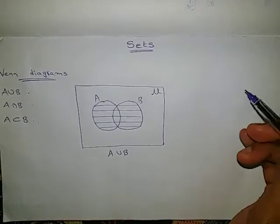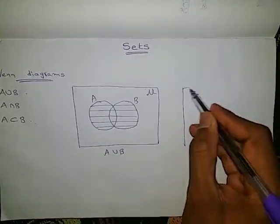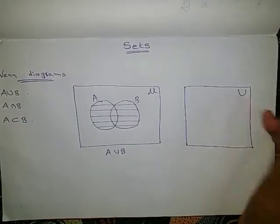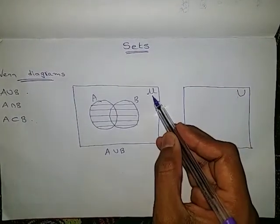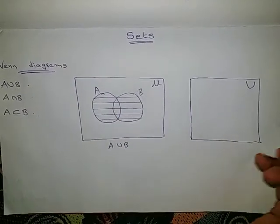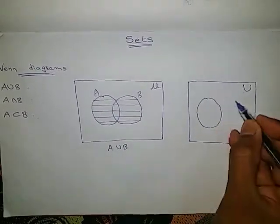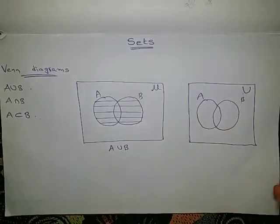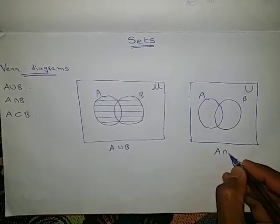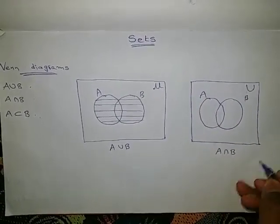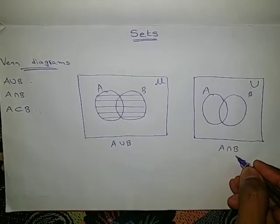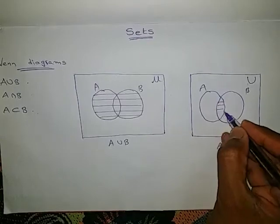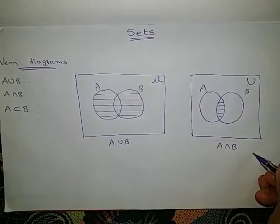Next, if we want A intersection B, then we have the universal set — it may be represented like this or as capital U. Again the same two sets A and B. Now it is asking about intersection, so only the area which is common for both the circles. For both these circles, this is the common area, so this is A intersection B.